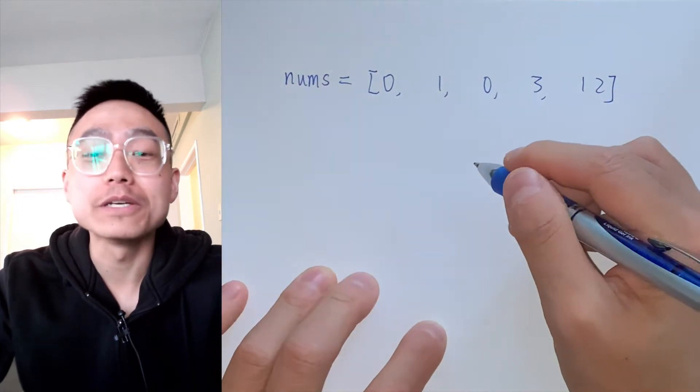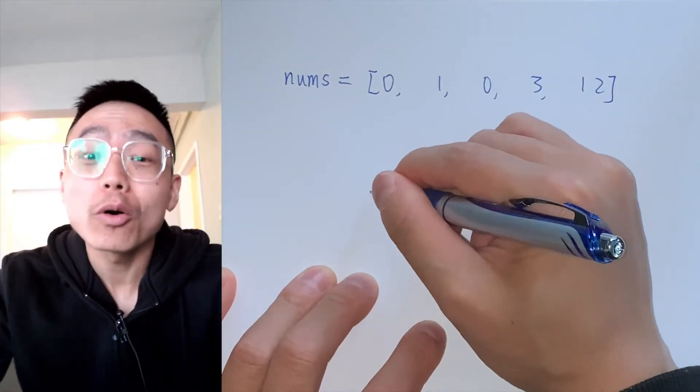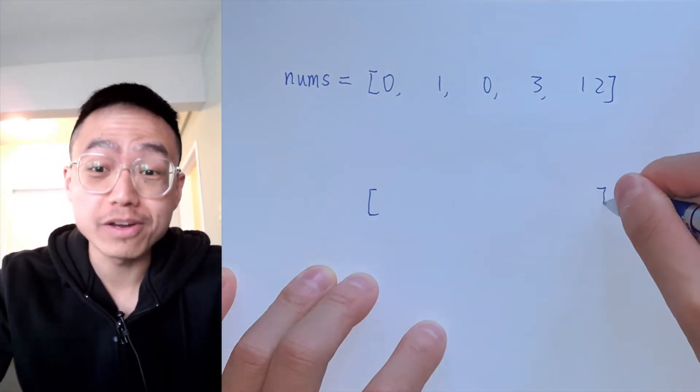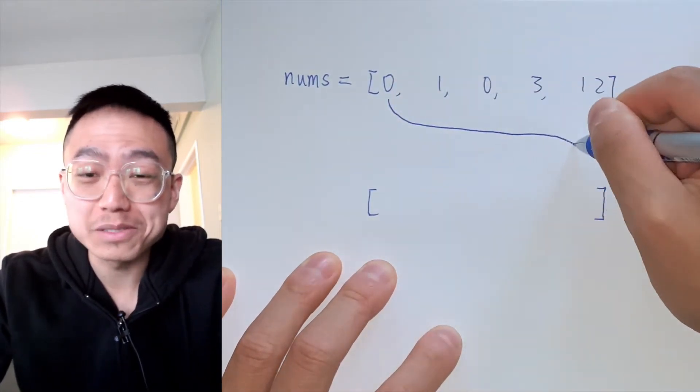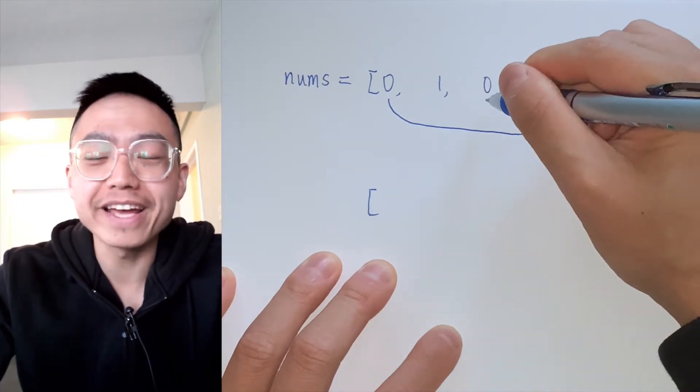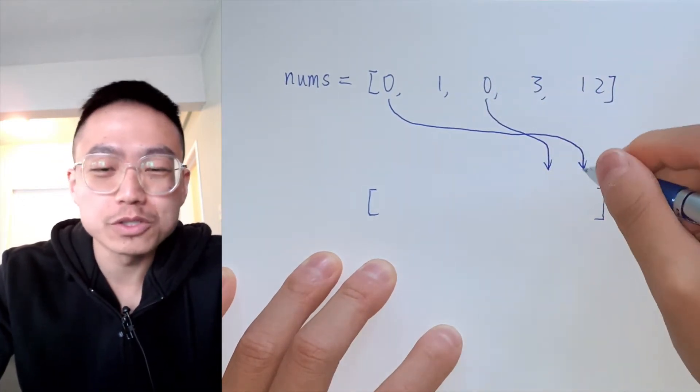We also need to maintain the relative order of the non-zero elements. And we must do this in place without making a copy of the array.